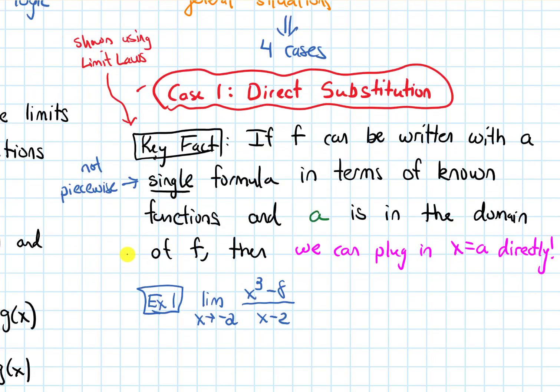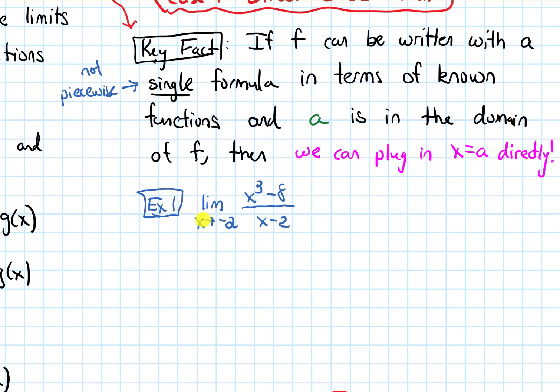Let's look at an example. I have the limit as x approaches negative 2 of x to the third minus 8, over x minus 2.